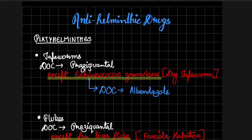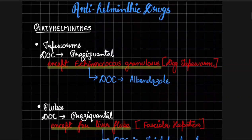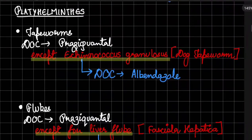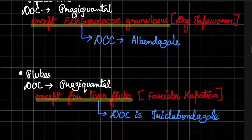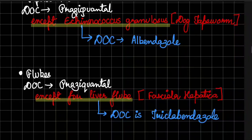Let's get started learning the anti-helminthic drugs. Starting with Platyhelminthes — tapeworms and flukes. For tapeworms, the drug of choice is praziquantel, except for Echinococcus granulosus, which is a dog tapeworm. The drug of choice for Echinococcus granulosus is albendazole.